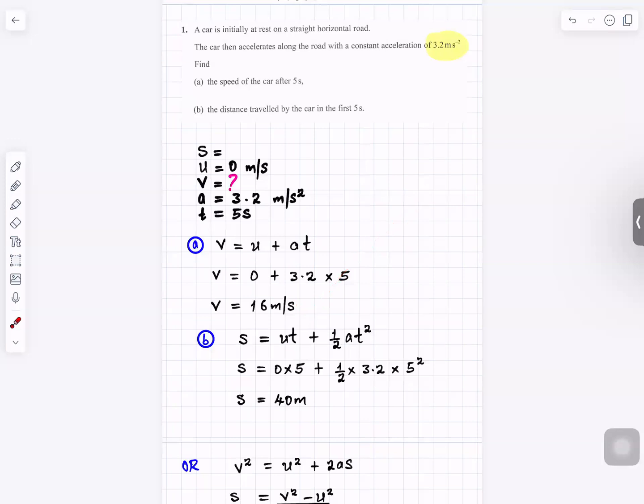And for part b, the distance traveled by the car in the first five seconds, we use s equals ut plus half at squared. u is zero, t is five, a is 3.2, t is five. Put that in the calculator, you get s to be 40 meters.